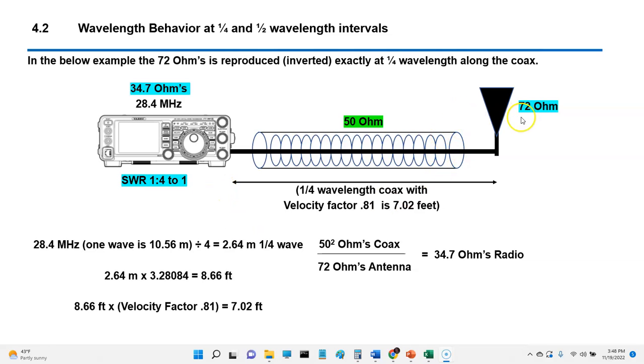Here's an example of a 72-ohm dipole antenna on a 50-ohm coax. In this configuration, with exactly a quarter-wavelength coax with a velocity factor at the frequency of 28.4 MHz, what's going to happen now is this antenna is going to have an invert function that will happen, and instead of having 72 ohms, you'll end up with 34 ohms. And again, that's based on this formula here.